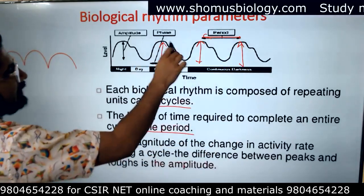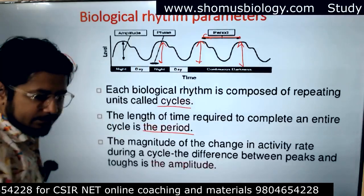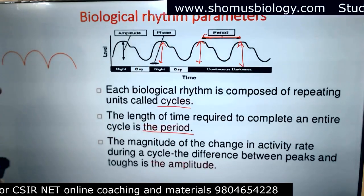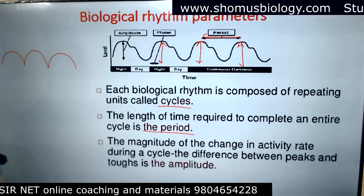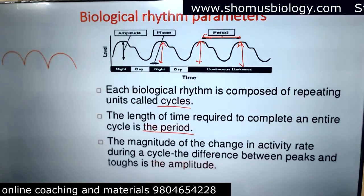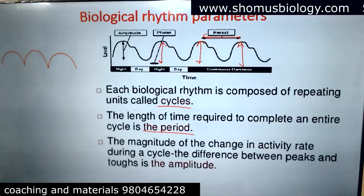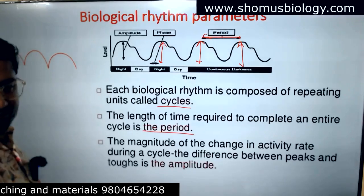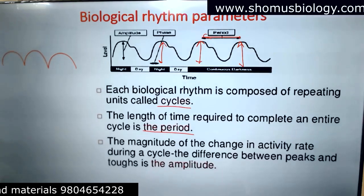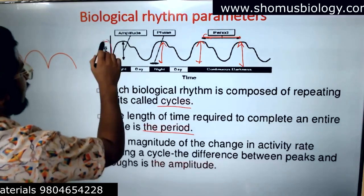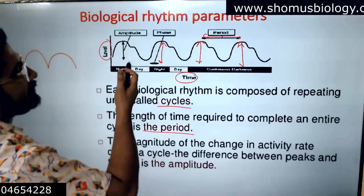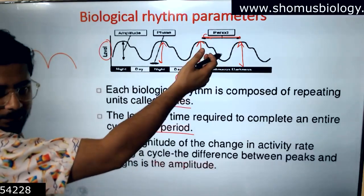The magnitude of the change in activity rate during the cycle and the difference between the peaks are known as amplitude. Cycle, period, amplitude — the time taken to complete the cycle is the period, and the difference between the peaks as well as the height is the amplitude. You can see this shows simple levels and a cycle of night and day, so the time frame is listed and this cycle is continuously and repetitively occurring.